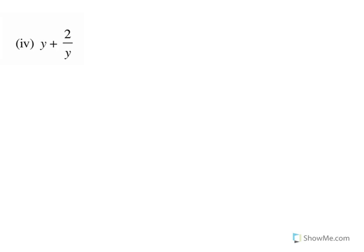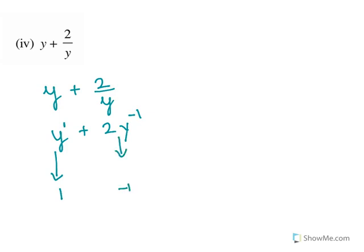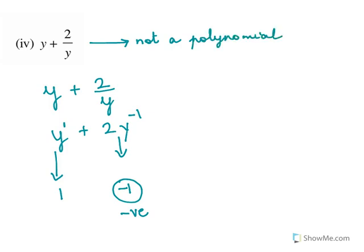Now let's examine this expression: y + 2/y. When 2/y is rewritten, it becomes 2 times y raised to -1, so the power of y is -1. The power of the first term y is 1, and the power of the second term is -1. Because this power is negative, the expression is not a polynomial. The reason: the second term has a negative power.